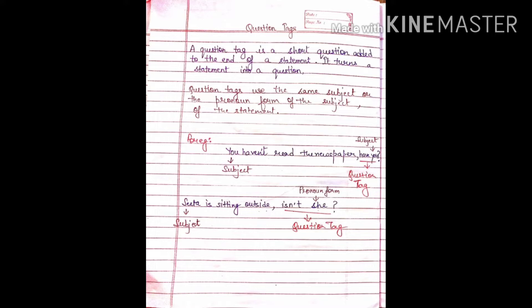Let's look at the examples. 'You haven't read the newspaper, have you?' and 'Sita is sitting outside, isn't she?' In the first example, 'have you' is the question tag added to the end of the statement. Note that the subject of the statement, 'you,' has been used in the question tag. In the second example, 'isn't she' is the question tag added to the end of the statement. The subject of the statement is Sita, so we have used the pronoun form of the subject — that is, 'she.'